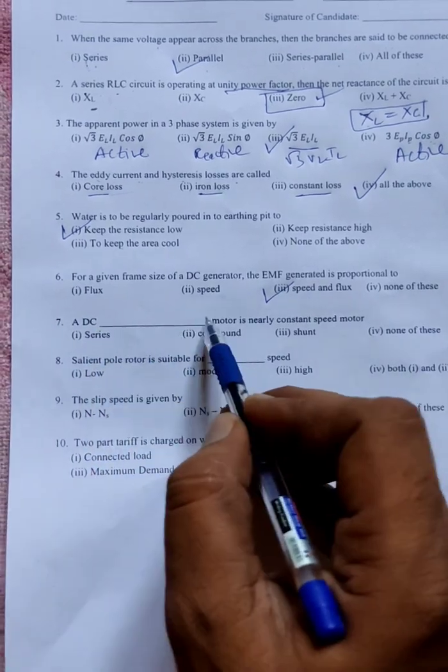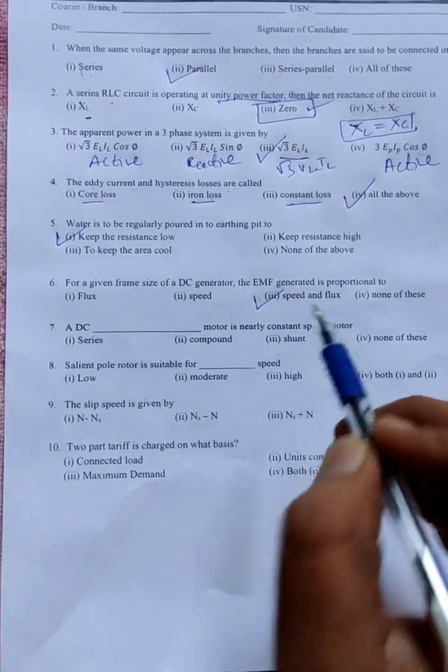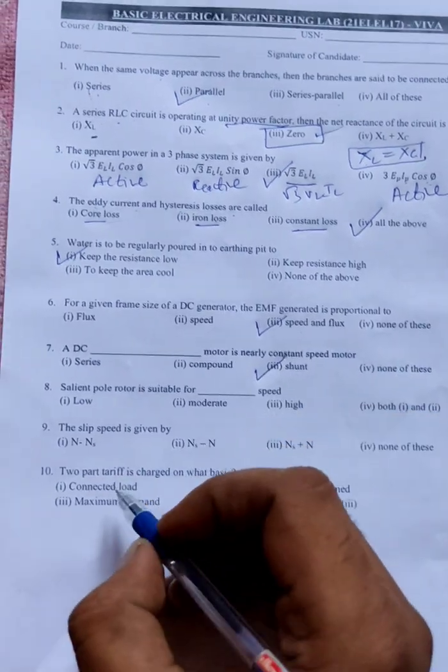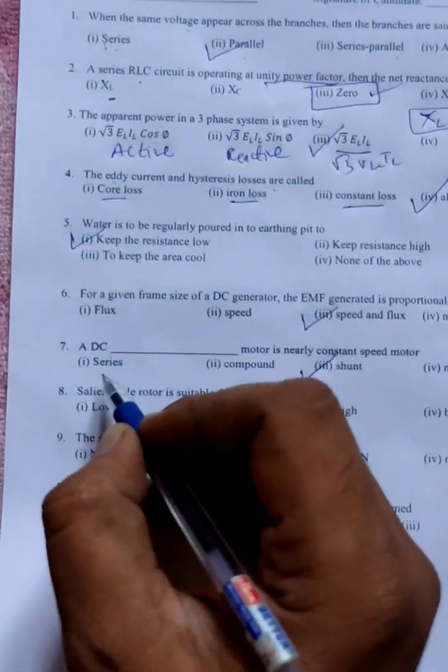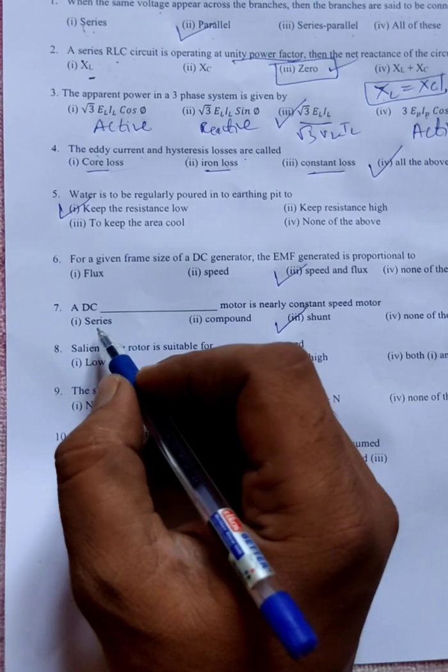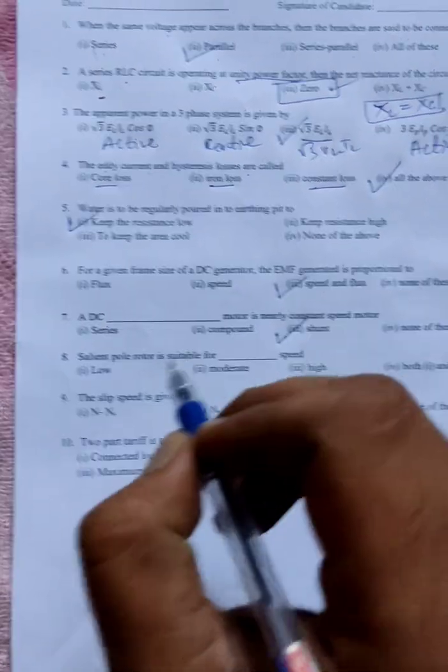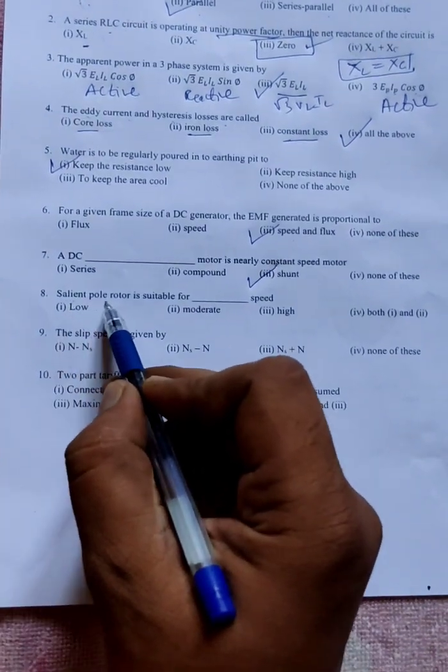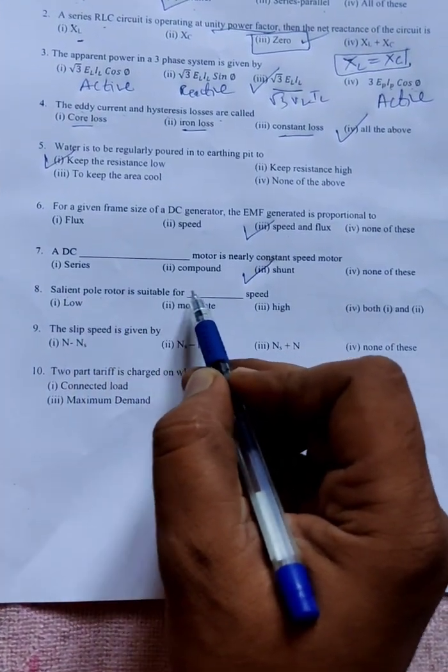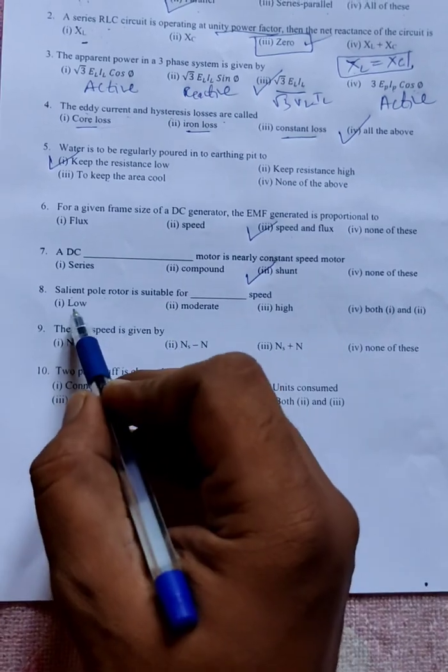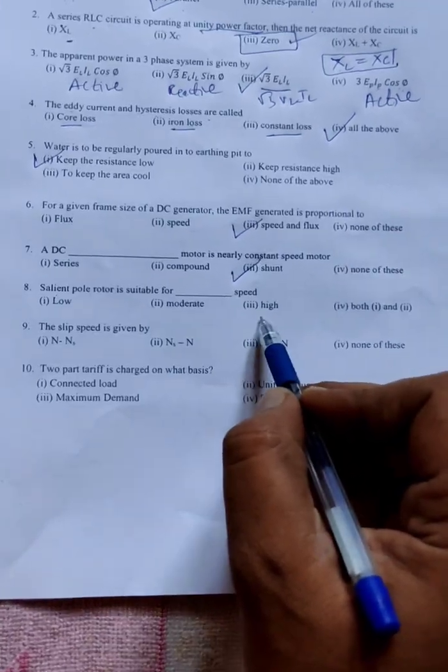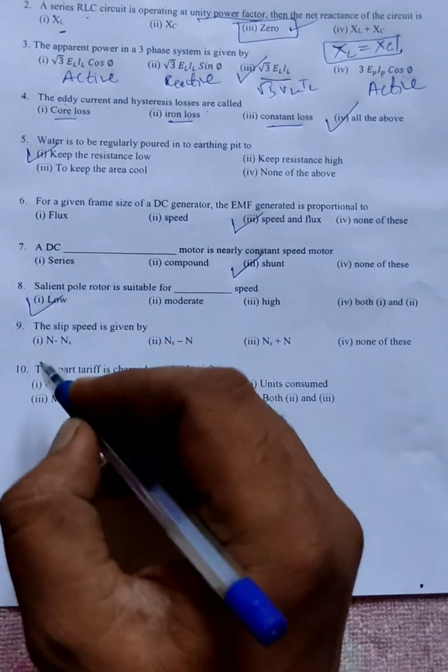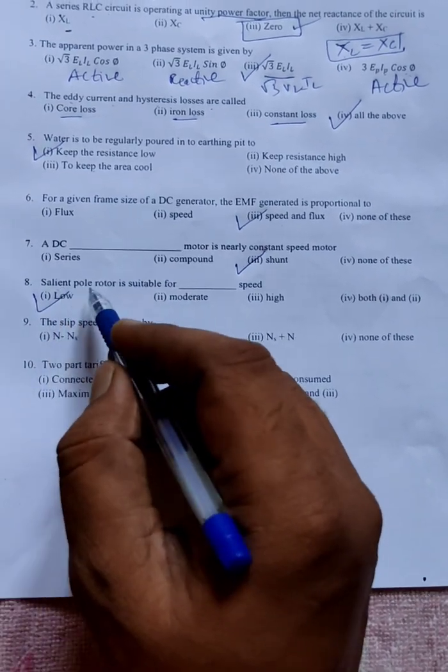Next, a DC shunt motor is nearly a constant speed motor. Shunt motor is a constant speed motor, and series motor is a variable speed motor. Compound motor lies in between.